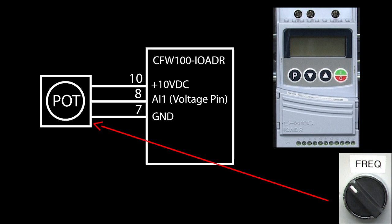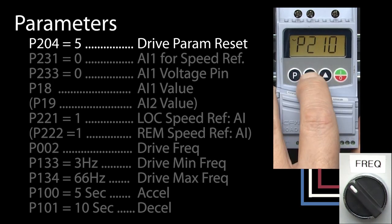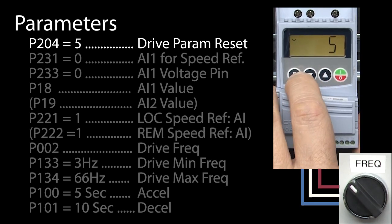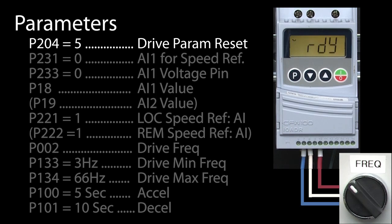I wired this potentiometer to analog input 1 like this. I'll apply power to the drive. Let's go to parameter 204 and set it to 5 to reset the drive parameters to factory default, just so we're all starting in the same place. Now, you wouldn't do that if you have an existing configuration you're trying to modify.